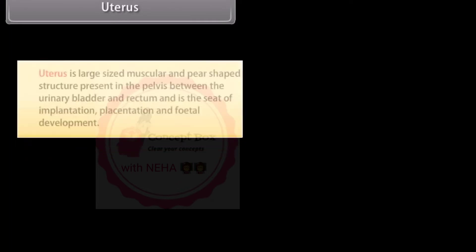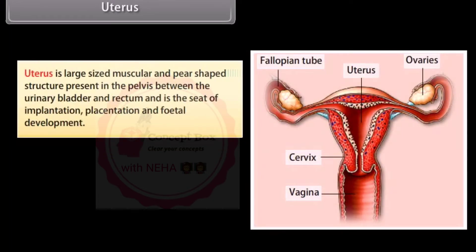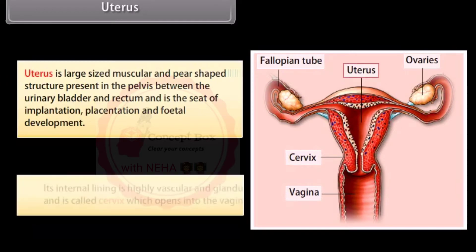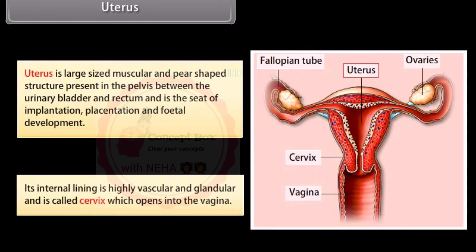The uterus is a large-sized, muscular, pear-shaped structure present in the pelvis between the urinary bladder and rectum, and is the seat of implantation, placentation, and fetal development. Its internal lining is highly vascular and glandular and is called the endometrium; the lower narrow portion is called the cervix, which opens into the vagina.